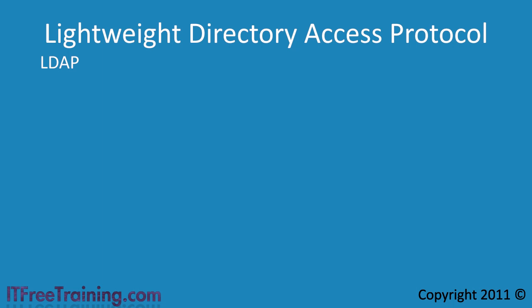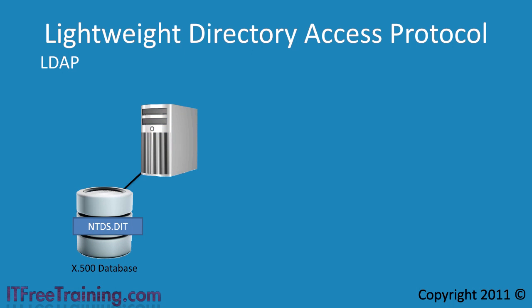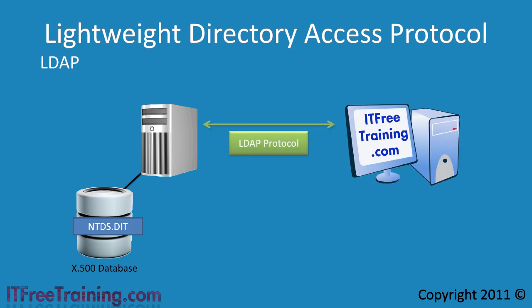So essentially you have two systems. The first is the Active Directory database based on the X500 standard which contains all the Active Directory objects — this is essentially the ntds.dit file. The second is LDAP, which allows you to access the database. Always think of Active Directory as a simple database and LDAP as a way of accessing the database.